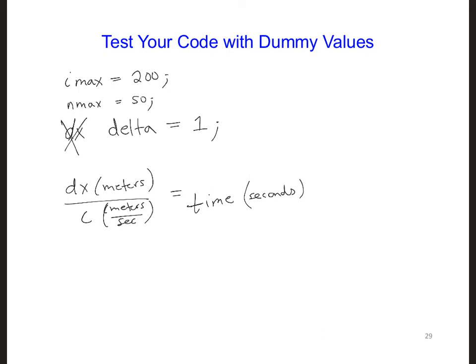So as we reduce dt, our solution will get better and better. Let's start with something a bit smaller than this for now, just to be safe. Let's set dt equal to half of this number that we just calculated. So we're going to take dt is 0.5 times dx divided by c.